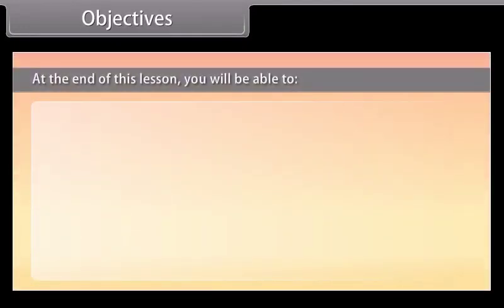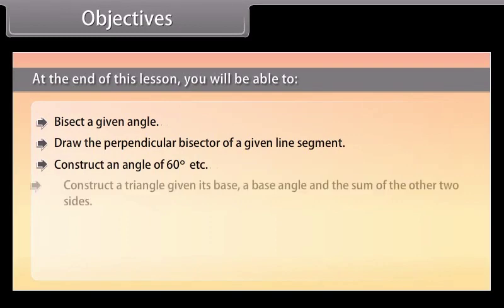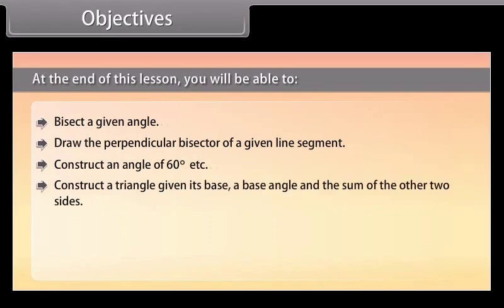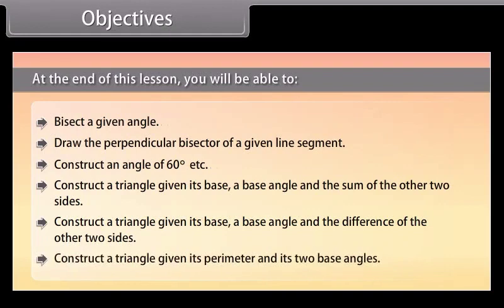At the end of this lesson, you'll be able to bisect a given angle, draw the perpendicular bisector of a given line segment, construct an angle of 60 degrees, construct a triangle given its base, a base angle and the sum of the two other sides, construct a triangle given its base, a base angle and the difference of the other two sides, and construct a triangle given its perimeter and its two base angles.